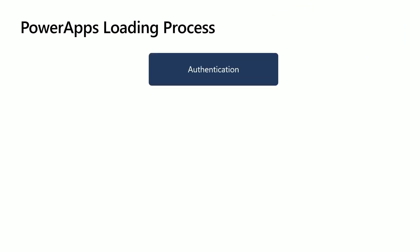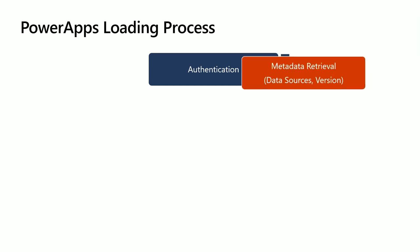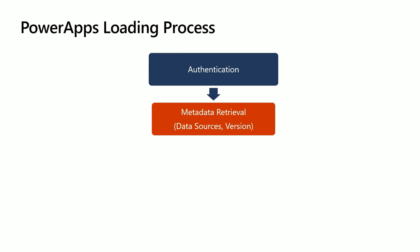Before we dive into tips, let's understand what happens behind the scenes when your Power App loads. The first step is authentication — Power Apps runs inside Office 365, so it has to authenticate your user account and confirm you have access to the app. When authentication is done, the next step is getting the metadata, including the most recent version of your app.